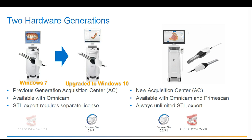If you're currently using an Omnicam and it is still on a Windows 7 platform, your recommended scanning software for full arch scans will be your Ortho 1.2.1 software. In this software, you will acquire your scans and will then have to manually export the STL file from the model phase. Once exported from the Ortho software, you will then have to upload this STL file into the patient's case on your SureSmile account online.